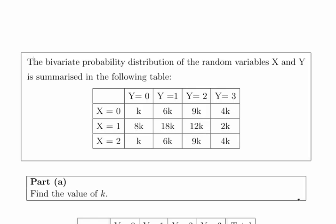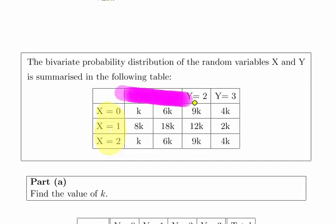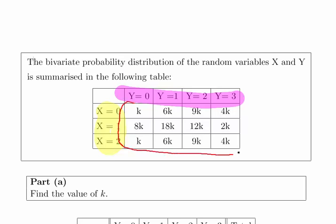We have a bivariate probability distribution with variables X and Y. X takes the values 0, 1, and 2, and Y takes the values 0, 1, 2, and 3. In the cells we have the joint probabilities of each pairing.